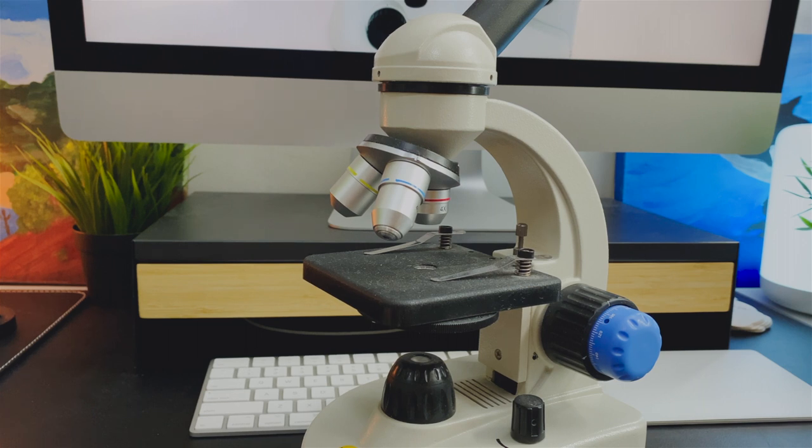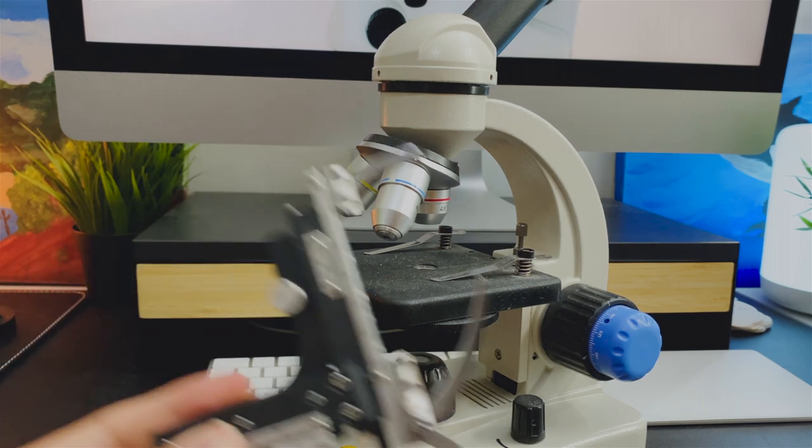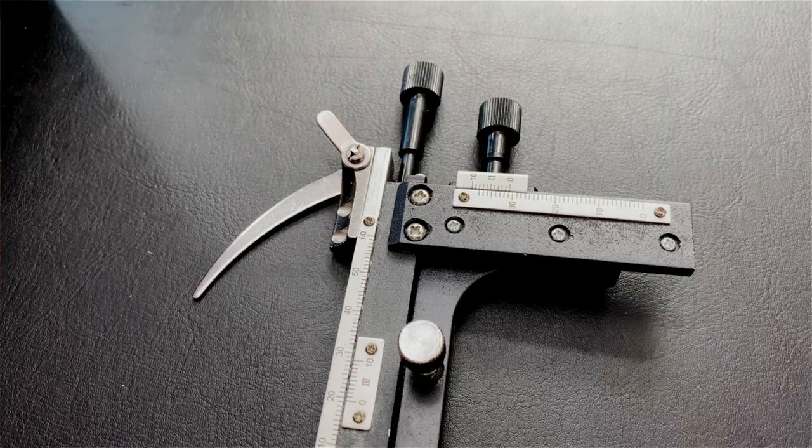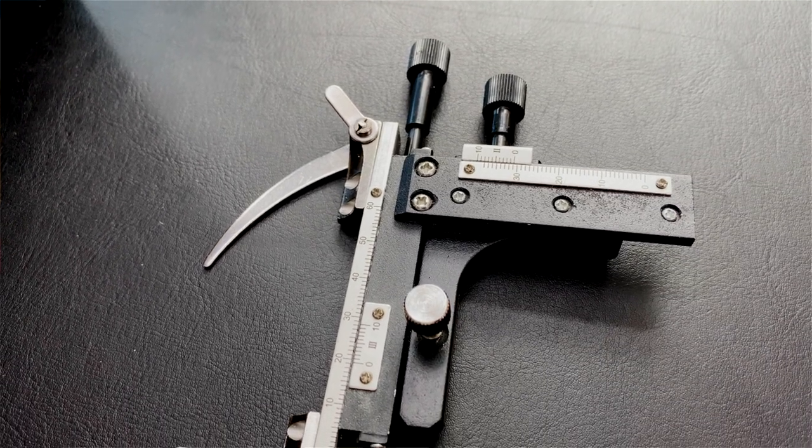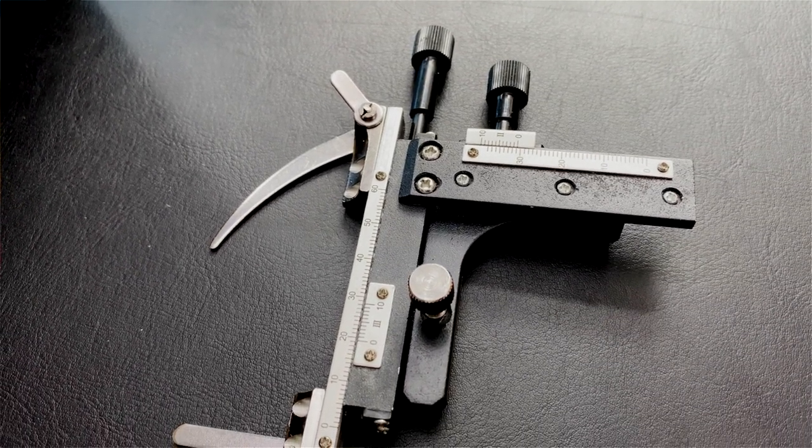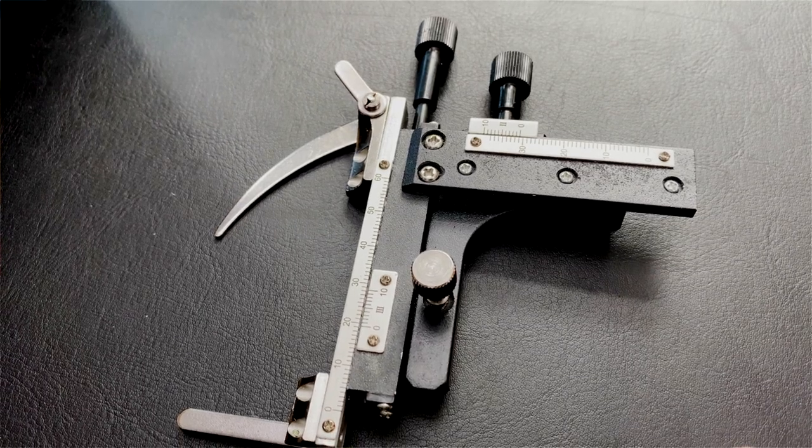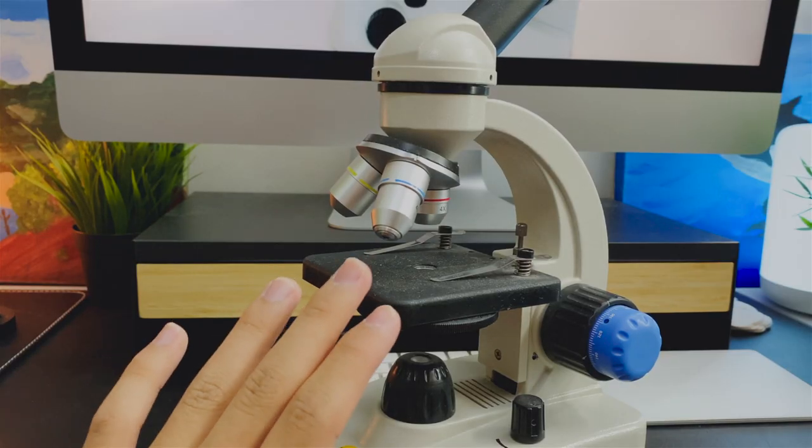But there's actually a cheaper solution. Buying third-party mechanical stages like this for $10 to $20 can transform a cheap microscope to a much better one.